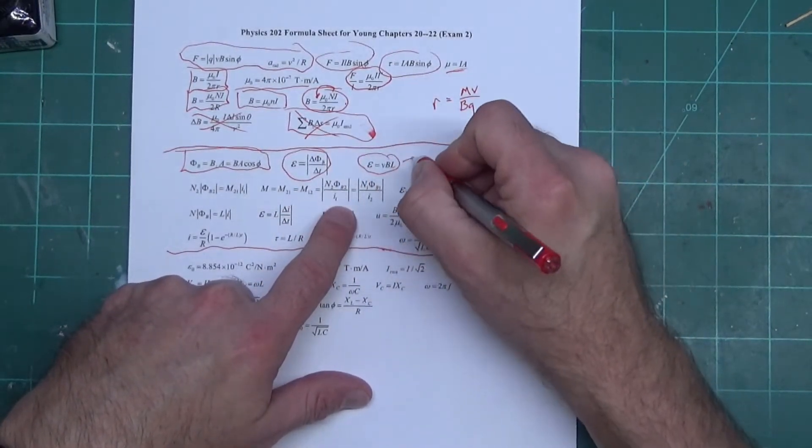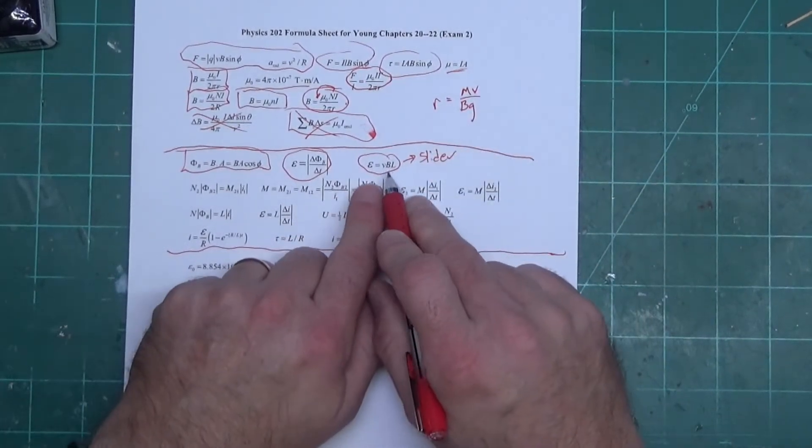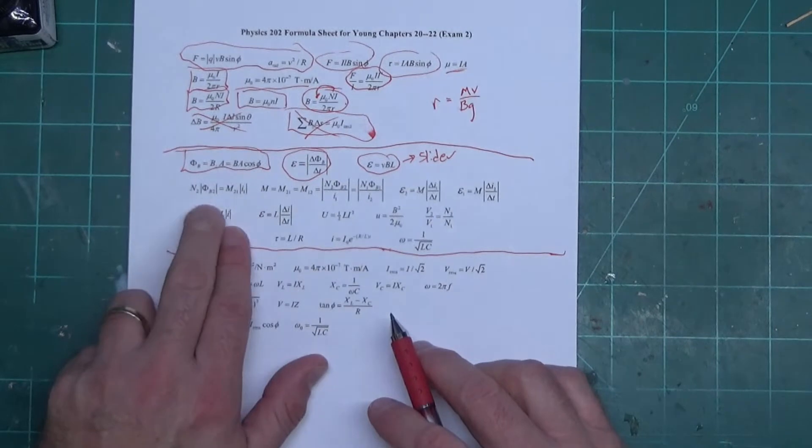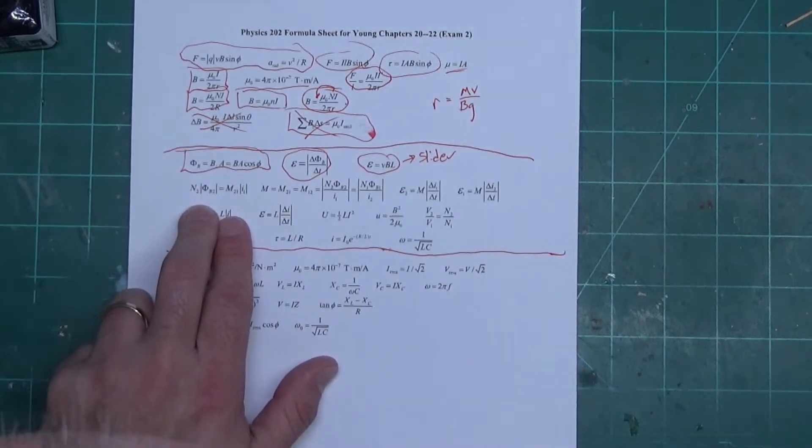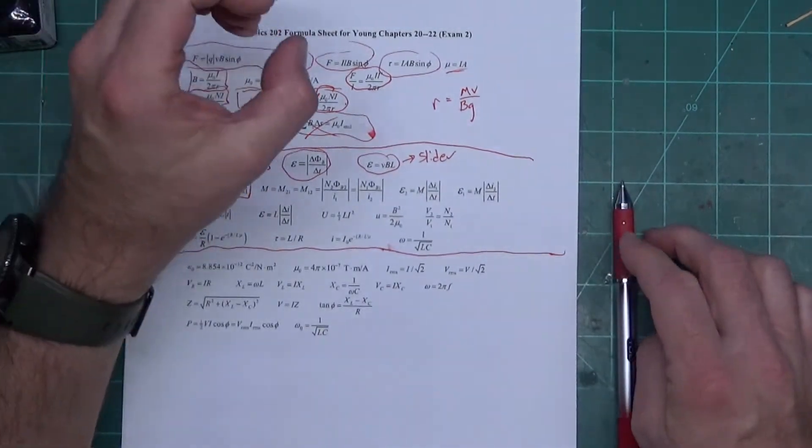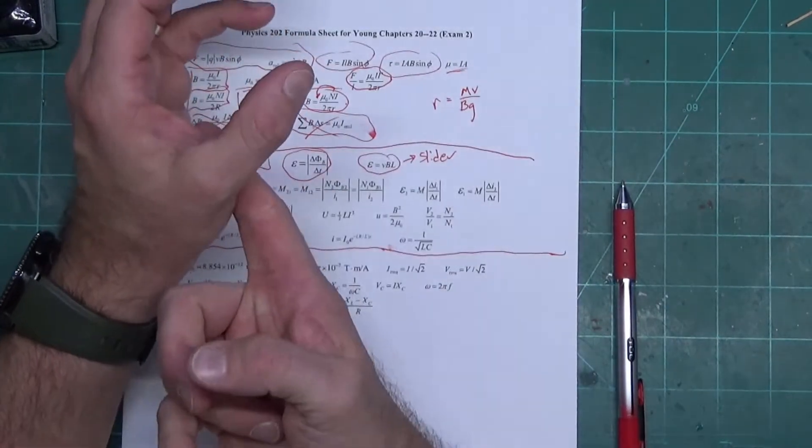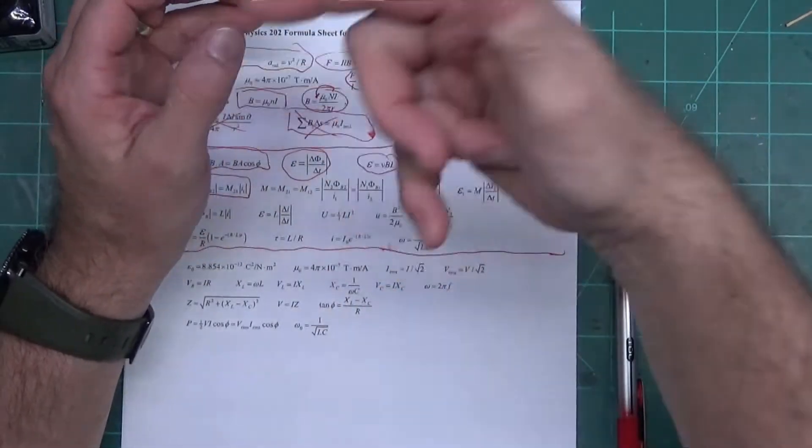This is Faraday's law of induction. This is Faraday's law of induction for a slider. Now the slider problems - he always puts one of those on a test, so it's good to have that. This is mutual inductance for two coils. You have one coil with a current, alternating current, you have another coil next to it.